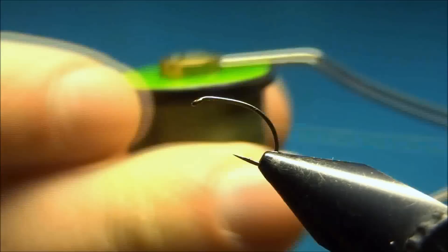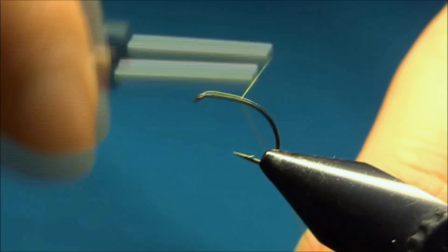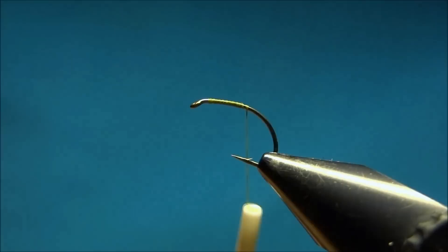The hook I'm using is the Kambasan B100 and the thread is the Uni A dot in olive. We'll start by putting down a layer of thread to the bend of the hook.